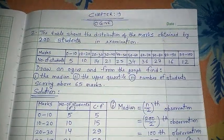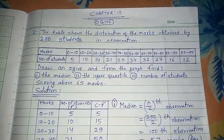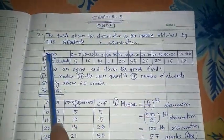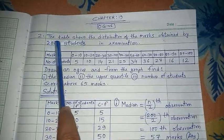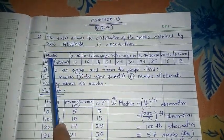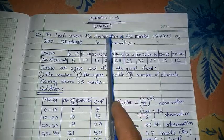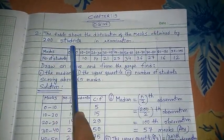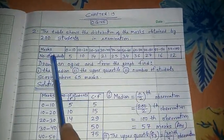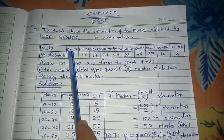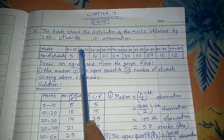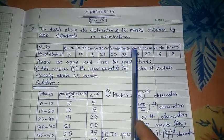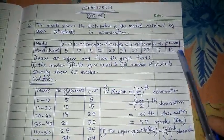Class 10 children, today we will learn some very important questions from chapter 19, the ogive section. Question number two: the table shows a frequency distribution showing the distribution of marks obtained by 200 students in examination. Marks 0 to 10 has 5 students, 10 to 20 marks has 10 students, 20 to 30 marks has 14 students, and it goes on to 90 to 100 marks with 12 students.